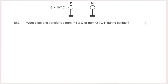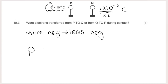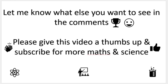Question 10.3 asks whether electrons were transferred from P to Q or Q to P. Electrons always move from the more negative sphere to the less negative sphere. P had a charge of −3×10⁻⁶ and Q had +1×10⁻⁶, so P was more negative. Therefore electrons moved from P to Q. That's where we'll stop today — let me know in the comments if you want electricity, magnetism, equations of motion, or graphs of motion in another video. Subscribe and have a wonderful day!